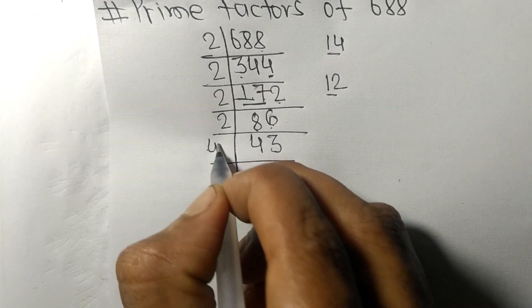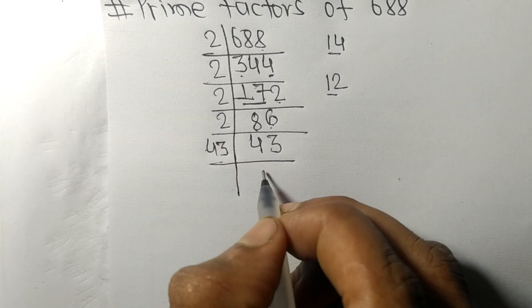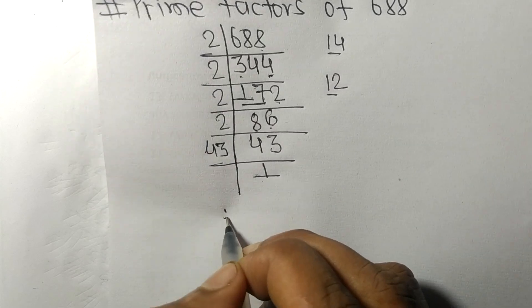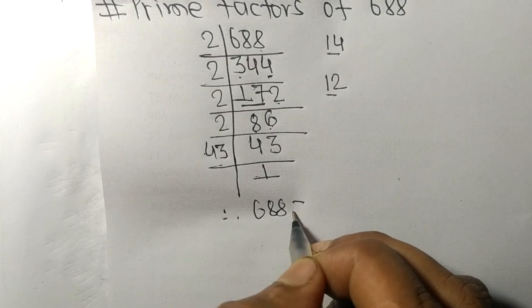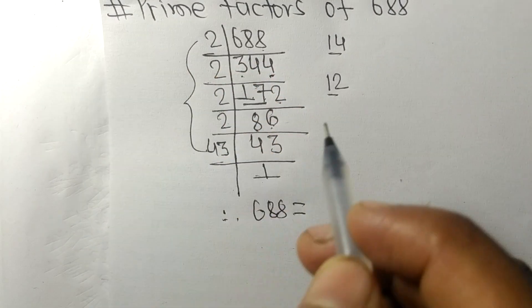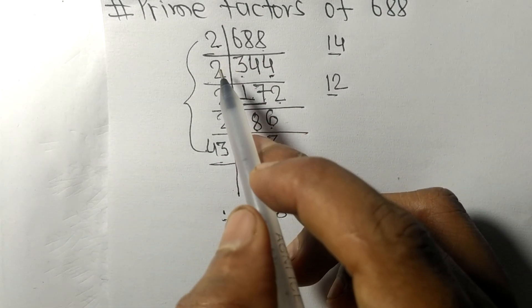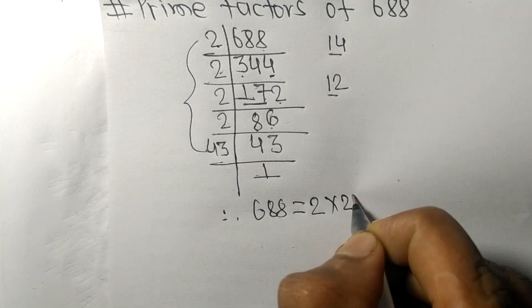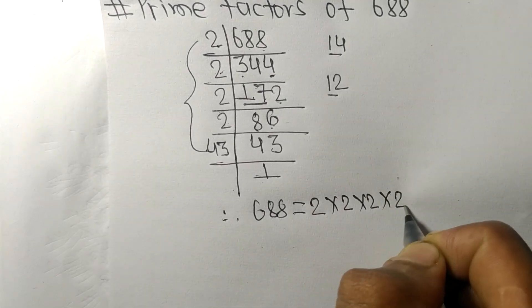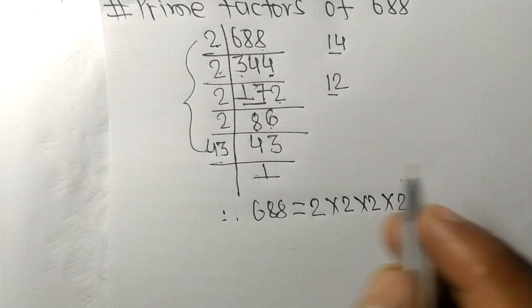And we get here 1. Therefore, 688 is equal to, from this side, we have 1, 2, 3, 4 times 2. So four times 2, and from here it is 43.